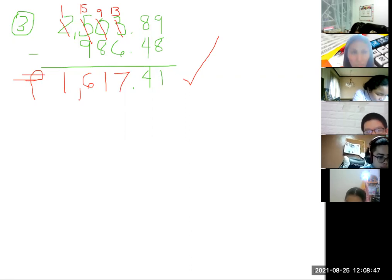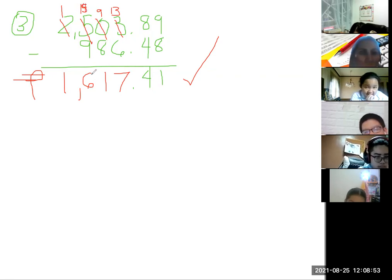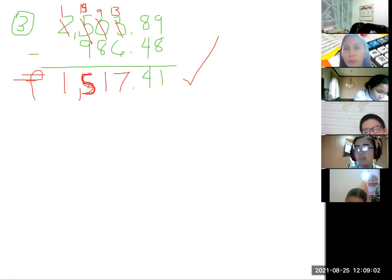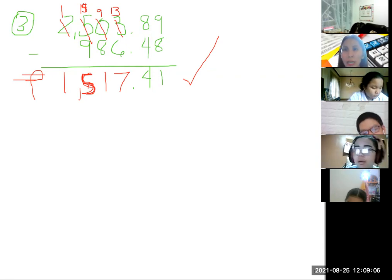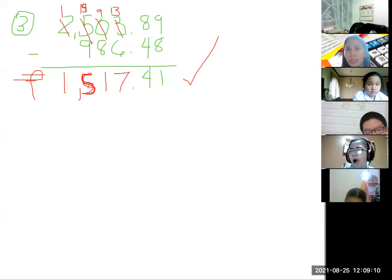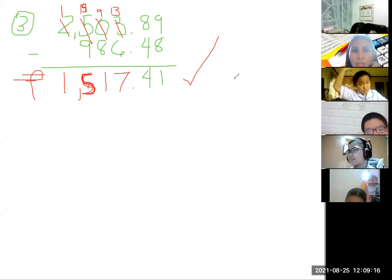Let's put a peso sign. Oh, is it 1,6? Sorry. 5. Oh no, it becomes 4. It's 5. Sorry. Sorry, Rian. Okay, so Arkin, Rian, Leo, Raven, they answered on the chat.